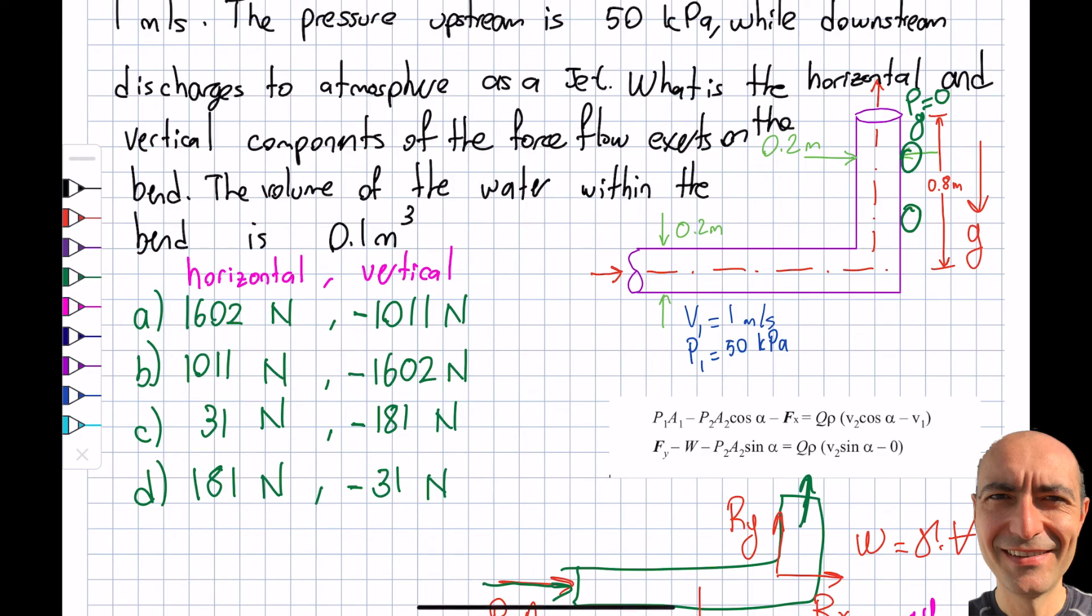So what will happen is the water is shooting out. So it's going to apply a force in this direction. And that's what I'm asking you. What is the vertical component of the force flow exerts. So it's going to be minus sign.